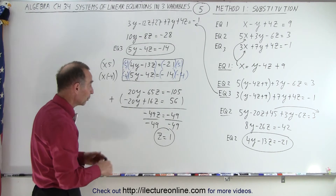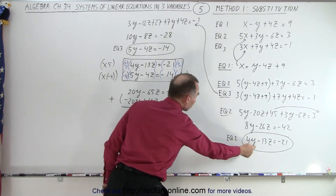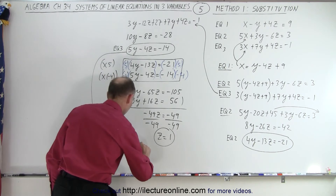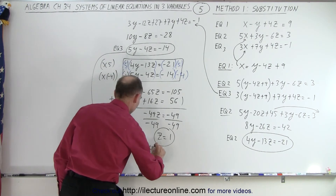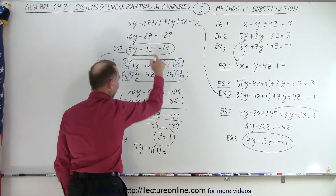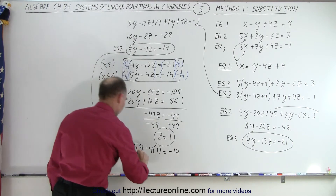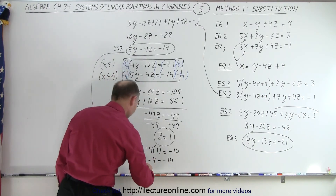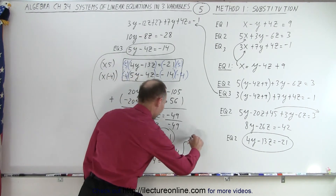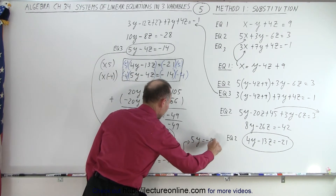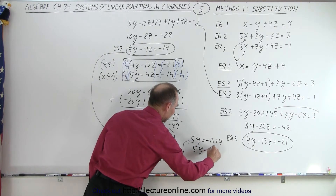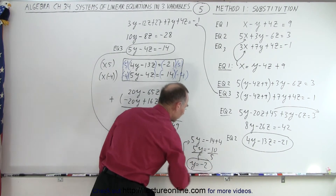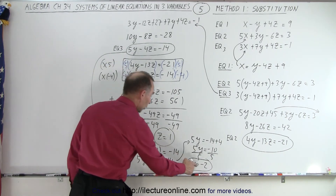We know z equals 1. To find y, we take one of the two equations and plug z equals 1 into it. Using equation three: 5y minus 4 times 1 equals negative 14, giving 5y minus 4 equals negative 14. Adding 4 to both sides: 5y equals negative 14 plus 4, or 5y equals negative 10. Dividing by 5, y equals negative 2. So now we have z equals 1 and y equals negative 2.